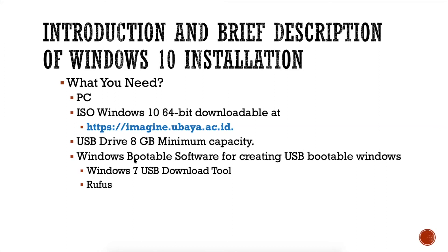To install Windows 10 from scratch: first, download the ISO from Microsoft Azure using your student account. You need a minimum 8 GB USB drive. Place the Windows 10 installation files on the USB drive, then use that USB drive as a bootable device. To create a bootable USB, use tools like Windows 7 USB Download Tool or Rufus.